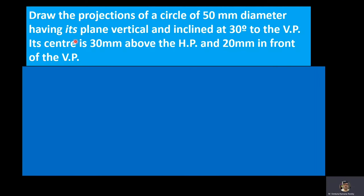The given problem is: draw the projection of a circle of 50 mm diameter having its plane vertical and inclined at 30 degrees to the VP. Its center is 30 mm above the HP and 20 mm in front of the VP.